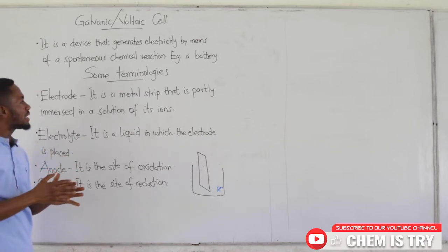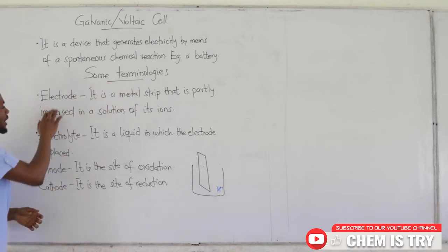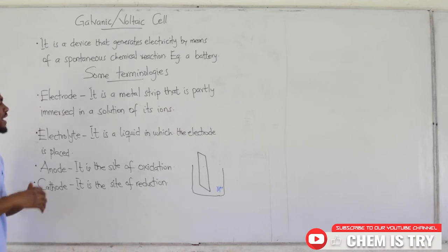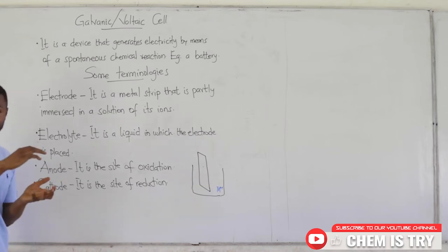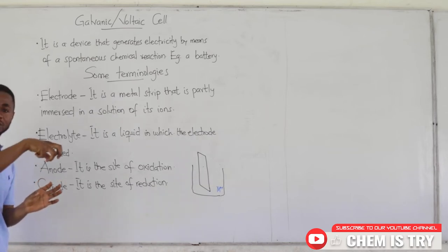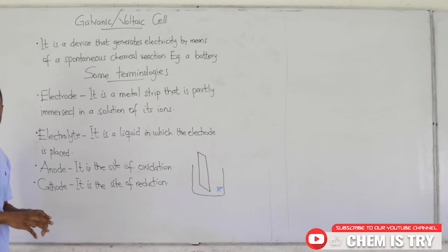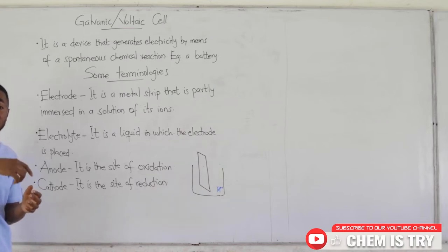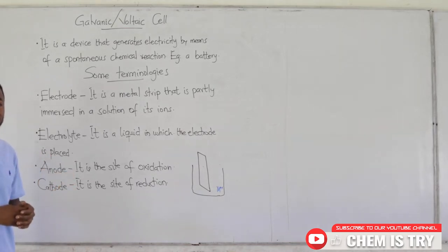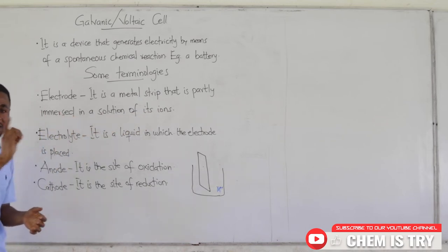But before we get into that, let's talk about some basic terminology we need to understand. The first one is electrode. An electrode is a metal strip that is partly immersed in the solution of its ions. It's a metal, and we place that metal in a solution. That solution should contain ions of that metal. So if it is a zinc metal, a small piece of zinc metal, you place it in zinc chloride or zinc sulfate solution, so the solution contains the ions of that metal.